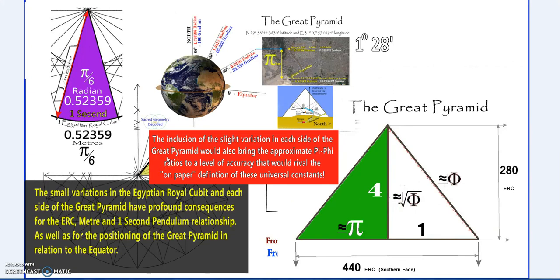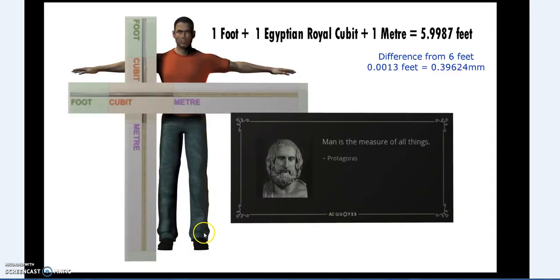If we include these small variations I pointed out between each side, this close approximate essentially becomes as accurate as what you can get on paper. I've got to remember to put in the link to Alan Green. He's done some fantastic work on this as well.